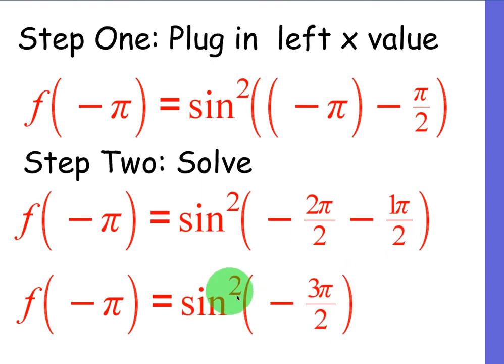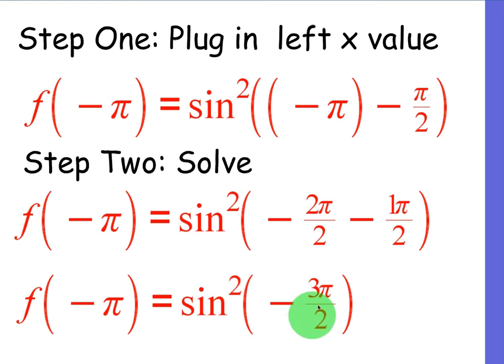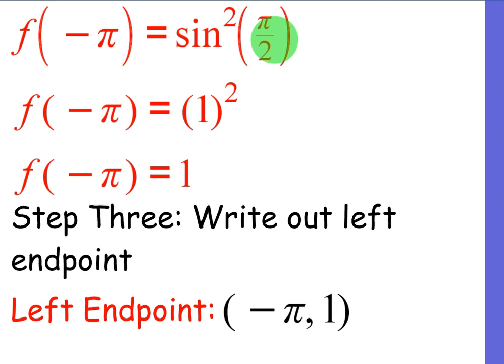Now we are squaring that. So it's sine squared of negative 3 pi over 2. So whatever we figure out sine of negative 3 pi over 2 to be, we're going to have to square that. Now fortunately, we know that negative 3 pi over 2 is the same as pi over 2, right? It's negative 270, which is the same as 90. So what is sine of pi over 2? It's 1. So once we figure that out, then we square it and we get 1 back. So our left endpoint is just negative pi, comma, 1.